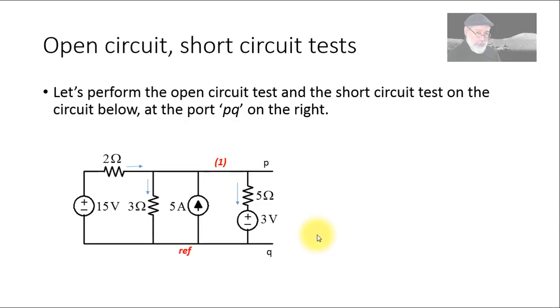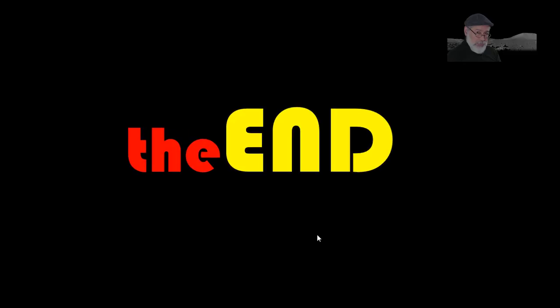And that is almost the end of this video. We still draw the equivalent circuit at the port: 12.7 volts and 0.97 ohms. That's all — thank you very much for keeping me company, and I hope to see you again in our next video.